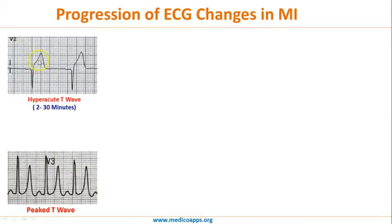You have to learn to differentiate between hyperacute T wave and peaked T wave. Peaked T wave is seen in hyperkalemia. Hyperacute T wave is the first manifestation of ECG change in MI, which typically happens between 2 to 30 minutes.